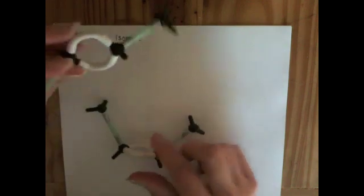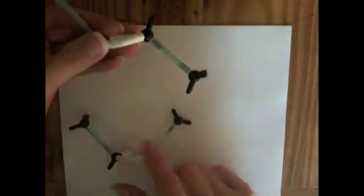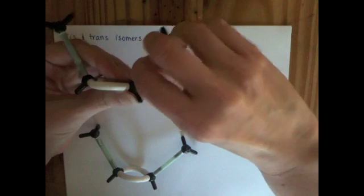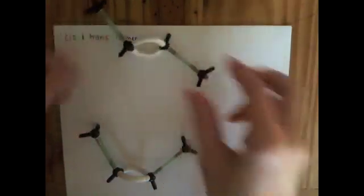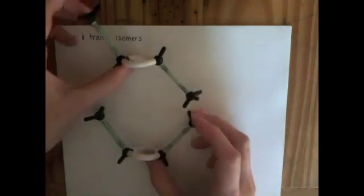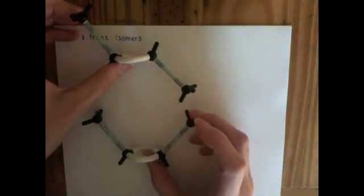You can't flip it. The only way that you can go from this structure to this one with models is to break a carbon-carbon bond and reform it. When you can't twist your model kit to get from one structure to another, that tells you that they are two totally different molecules.